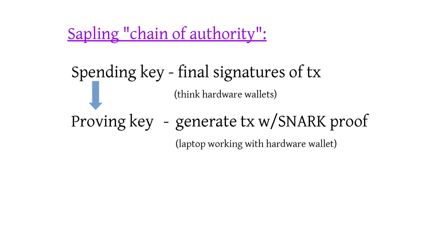From the spending key, you can generate the proving key — or proof authorizing key as it's called in the spec. These arrows are always one way: you can generate the proving key from the spending key, but you can't go back. The proving key is what generates the actual transaction with the SNARK proof.